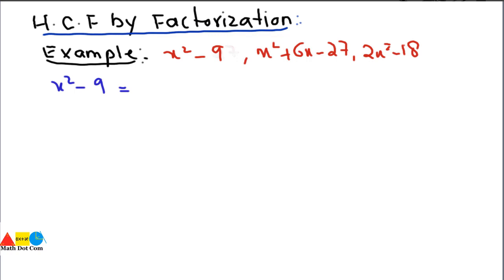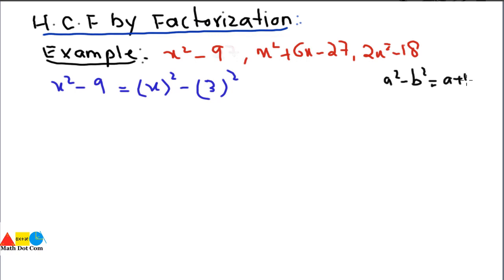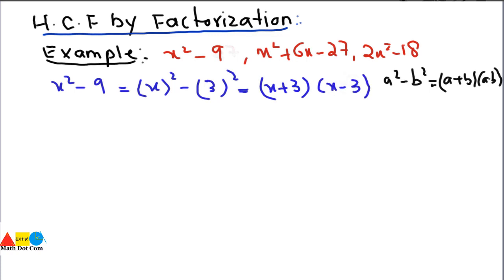It is clear that we can write the first expression as x² minus 3². Using the identity a² minus b² equals (a + b)(a − b), we can write this expression as (x + 3)(x − 3). These are the factors of the first given expression.